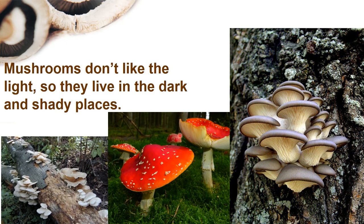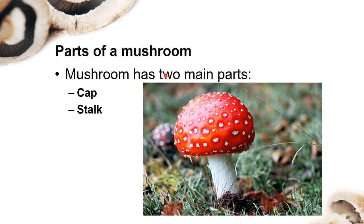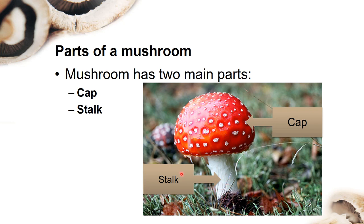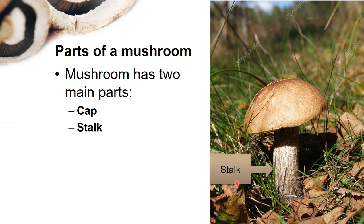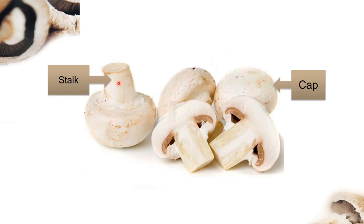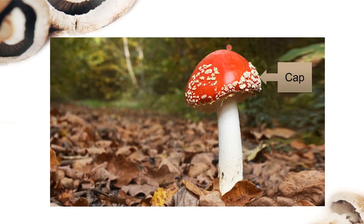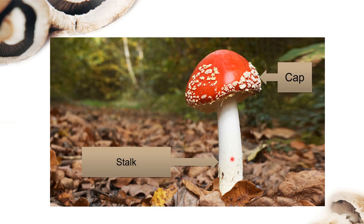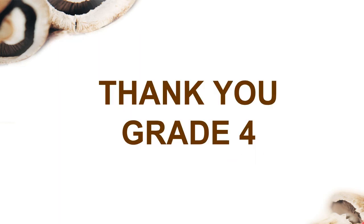Now, what are the parts of a mushroom? A mushroom has two main parts: the cap and the stalk. This is the cap, and this is the stalk. The stalk is the stem of the mushroom, and the head of the mushroom we call the cap. Thank you grade 4 for your attention.